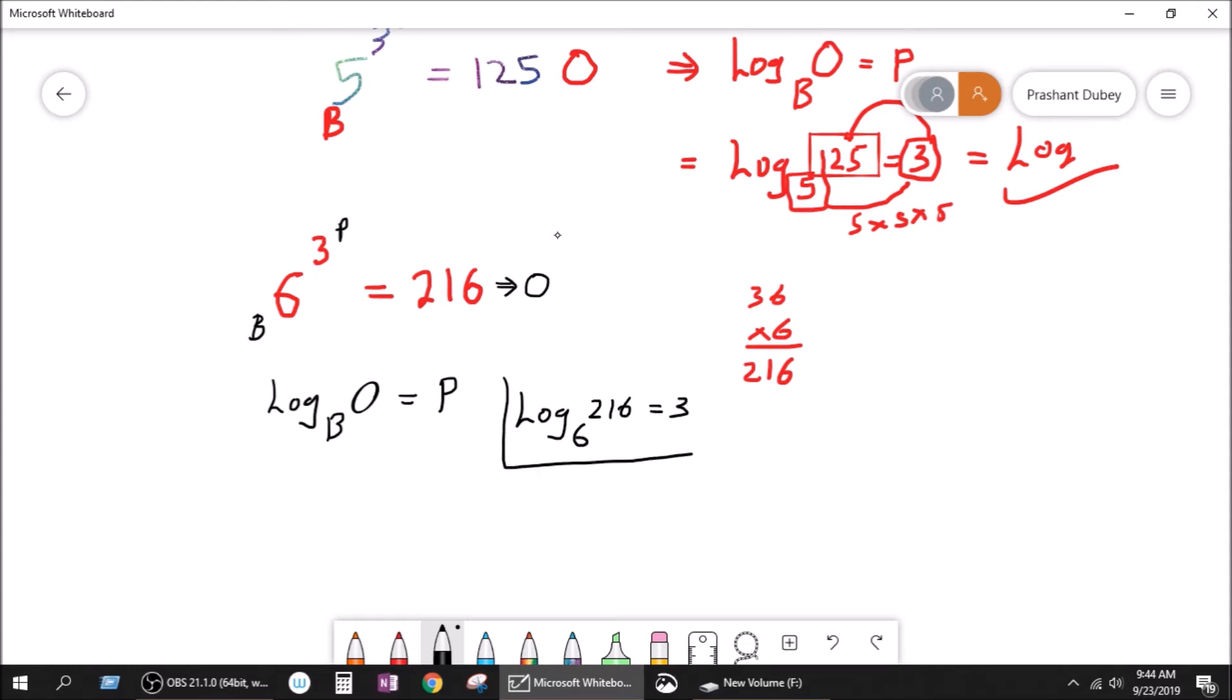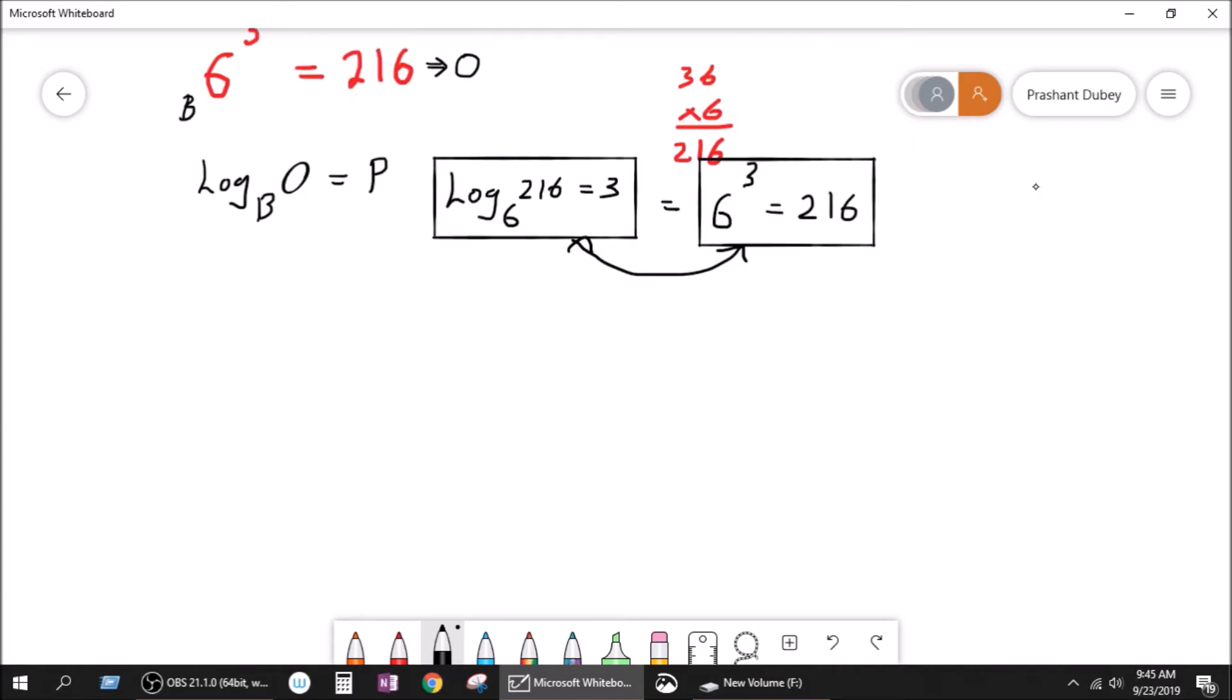So this will be equal to 6 to the power 3 equal to 216. But just these two are written in different forms. They are basically the same thing. How do we find the value of this? Log 216 to the base 6 is equal to 3. How do you find this value using a scientific calculator? So let's have a look at this.